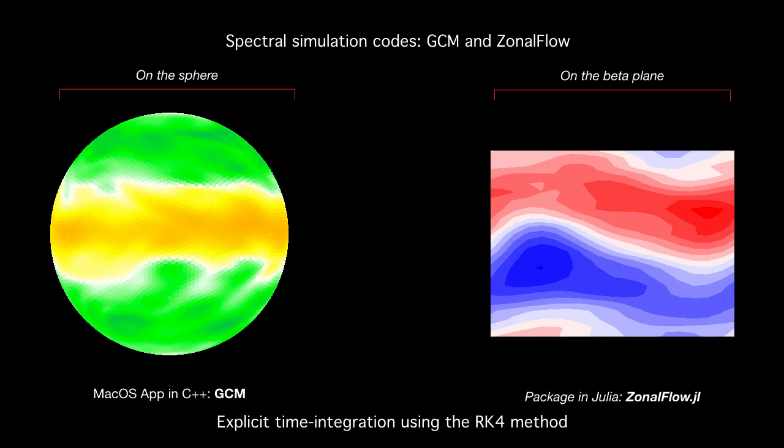Time for results. So we've coded in these equations in two separate pieces of code. On the spherical surface, for simulations on the spherical surface, we have a macOS app called GCM. And the beta plane simulations are done using a Julia package that we've developed called zonal flow. And the results I will be showing you are for a large relaxation time. So they serve to demonstrate how, firstly, that GCE2 matches GQL results, as one would expect. And secondly, that these two equivalent formulations improve upon the quasi-linear dynamics.